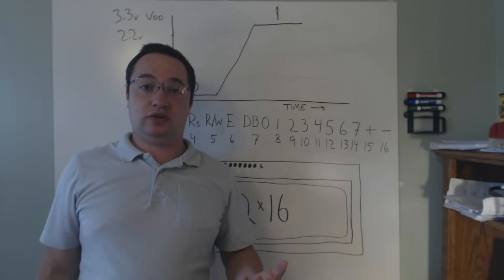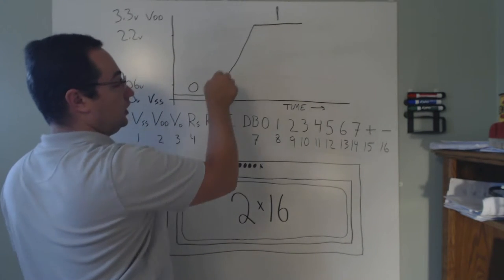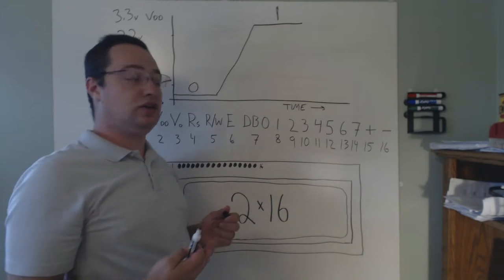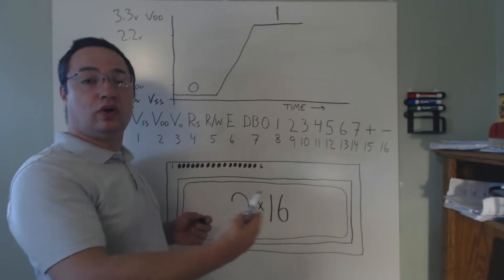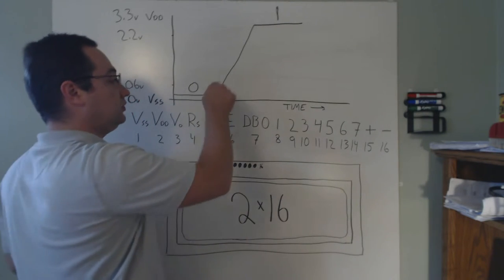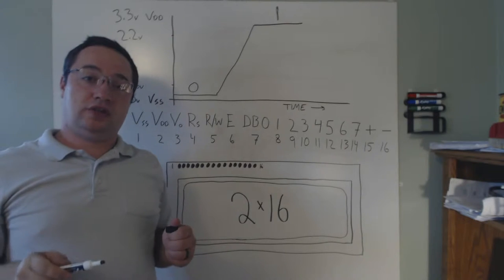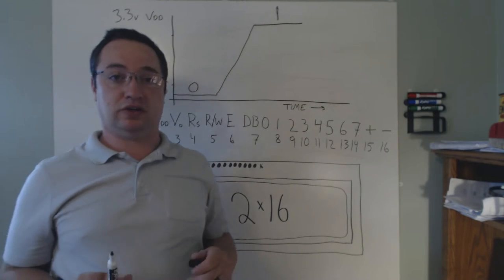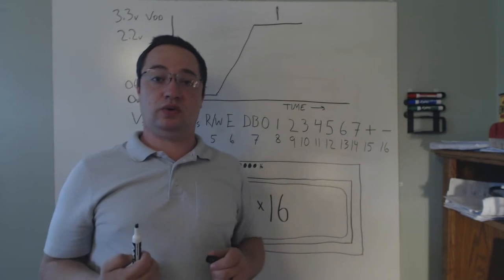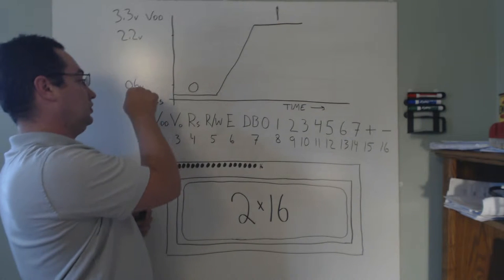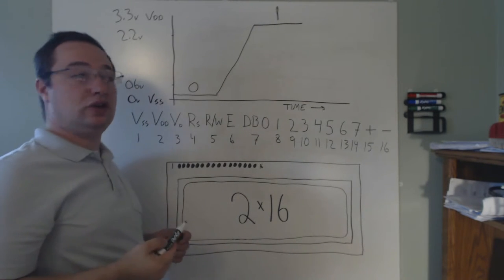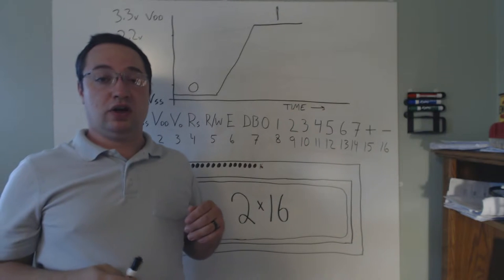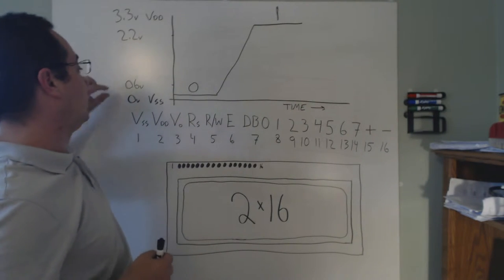Certain things to understand when talking about digital communication is that this transition time has to be taken into account. When sending data, the protocol that receives that data needs to be able to compensate for this transition time. In the case of the parallel bus, the enable pin is used to compensate for this. From here on out, we can assume that a zero is a low voltage and a one is a high voltage.